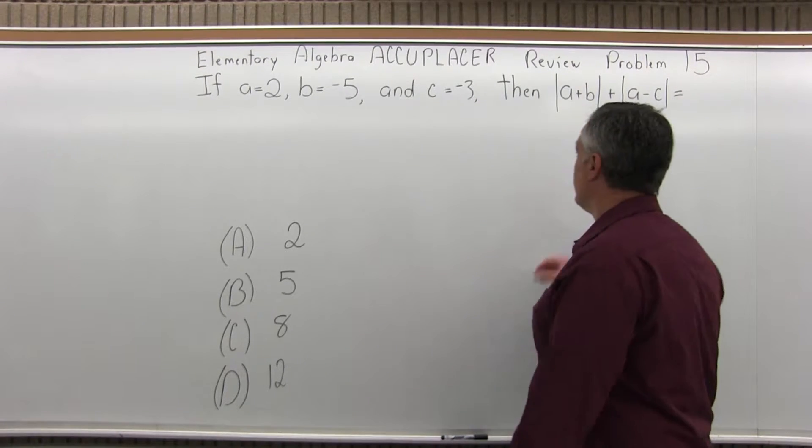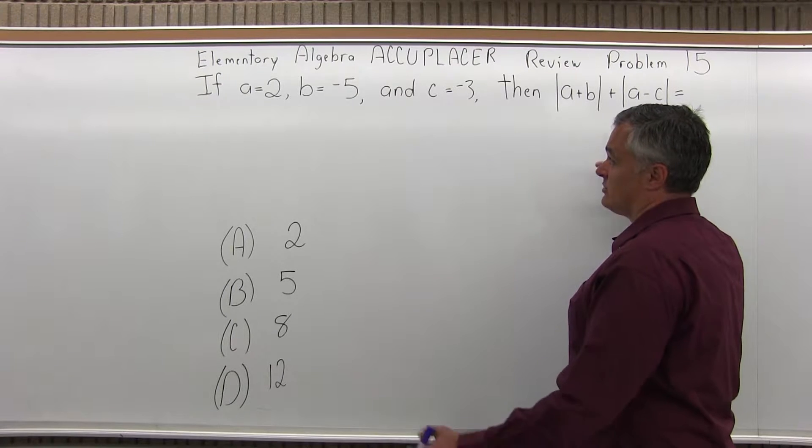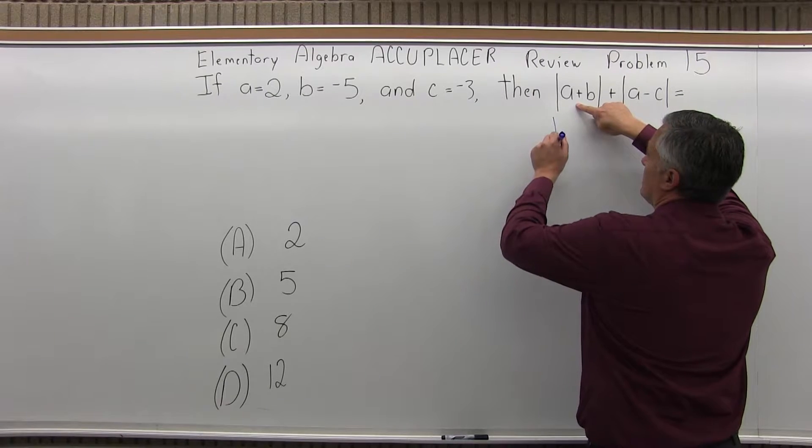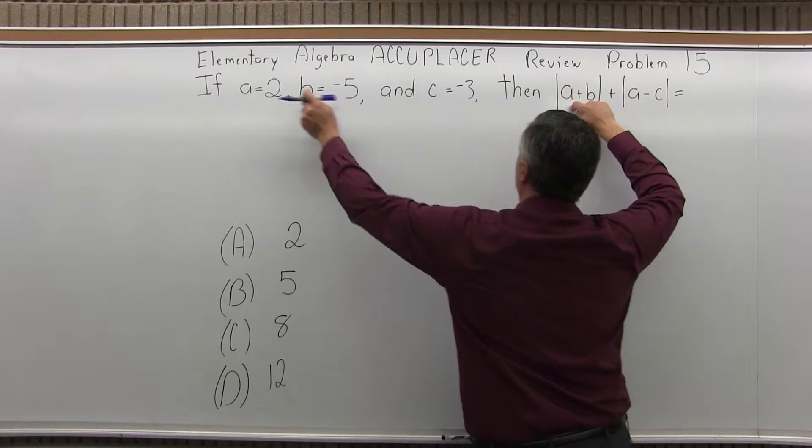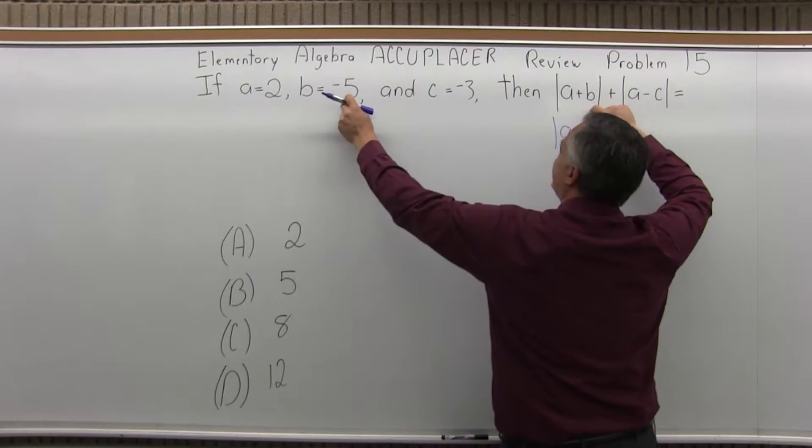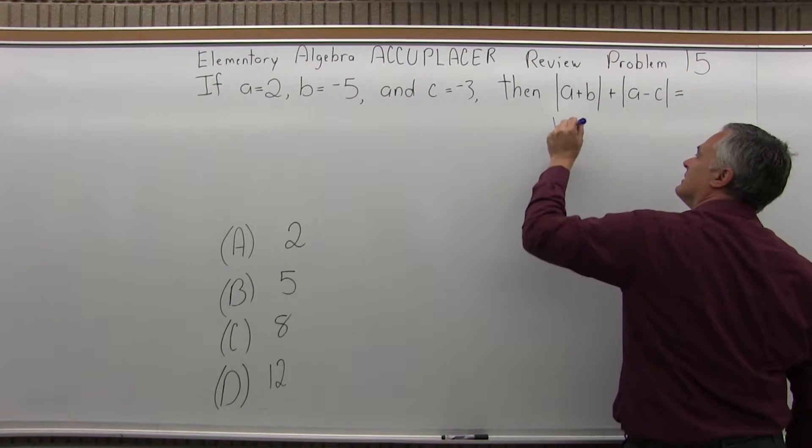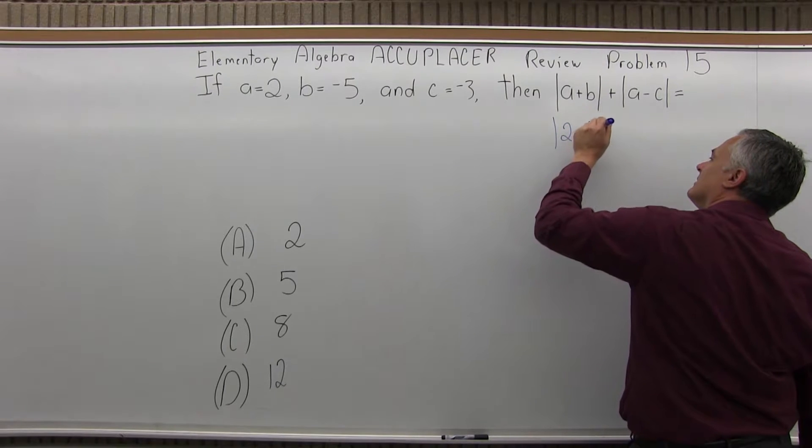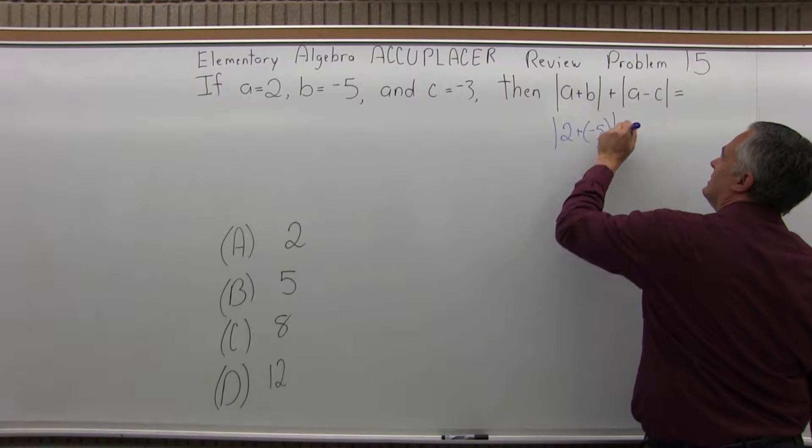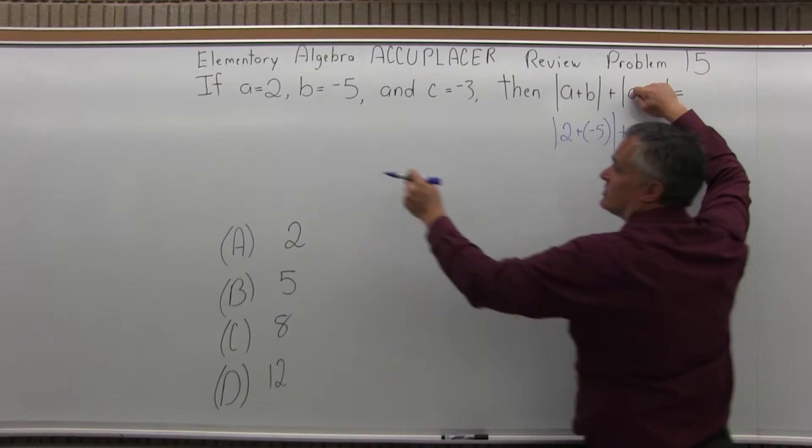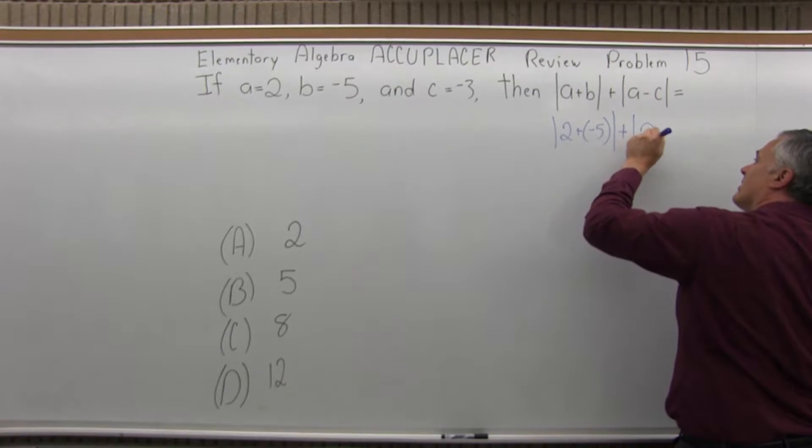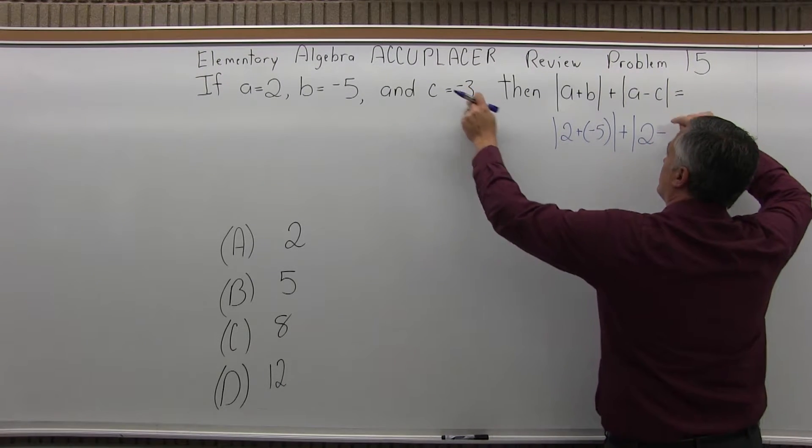So let's plug in the values for A, B, and C and do the work and see what matches up. Absolute value of A plus B will be absolute value of A is 2 plus B is negative 5. I'll put that in absolute value. Plus A minus C. So again, A is 2 minus C is negative 3.